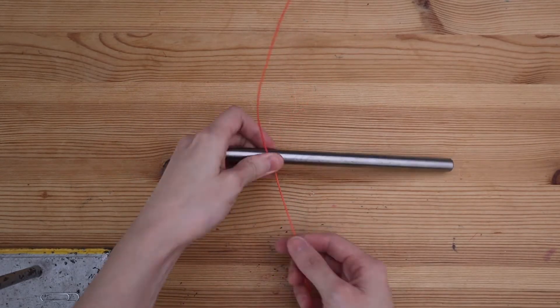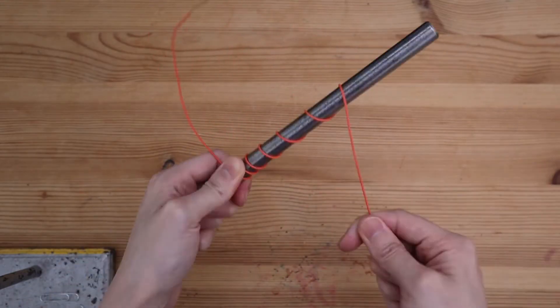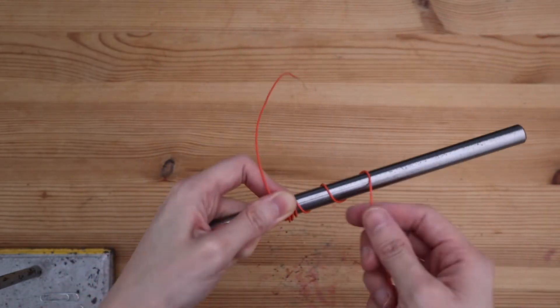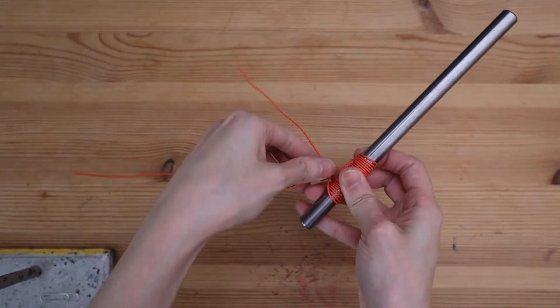Wrap the insulated wire around the iron core, making sure it's tightly wrapped. I'm counting 25 turns for my electromagnet. Give the wire a twist to keep the coil in place.